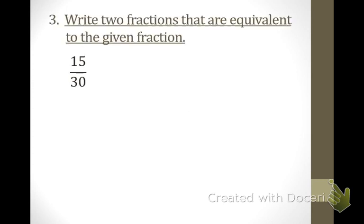Number three: write two fractions that are equivalent to the given fraction. From our notes, you can either multiply by the same number on top and bottom, or divide by the same number on top and bottom. Try this on your own. The fraction is 15 over 30. Who can tell me one example of what you did? Michael, what did you do? 3 sixths. How did you get 3 sixths? He divided by 5 on top and on bottom. Remember, this is the work I want to see.